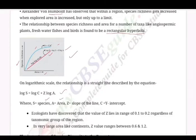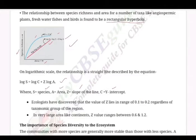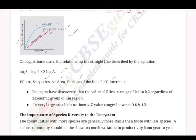In the equation log S = log C + Z log A, S represents species richness, A represents area, Z represents the slope of the line, and C is the y-intercept. The value of Z generally lies in the range of 0.1 to 0.2, irrespective of the taxonomic group or region. However, for large areas like continents, the value of Z lies in the range of 0.6 to 1.2.